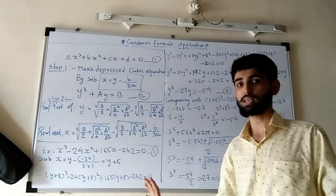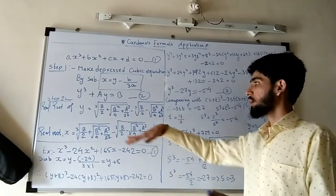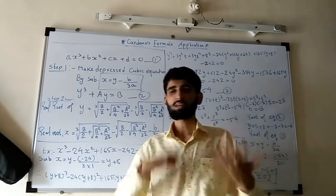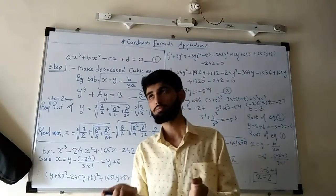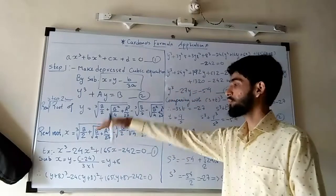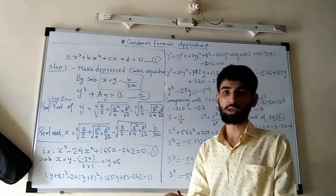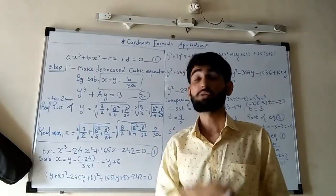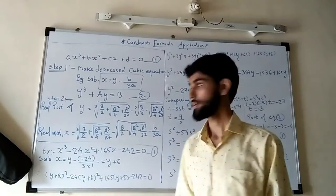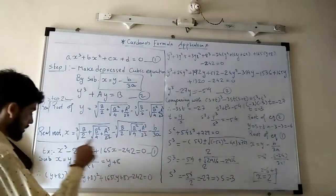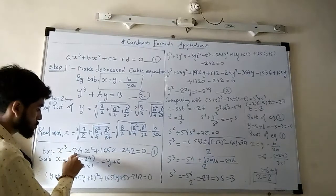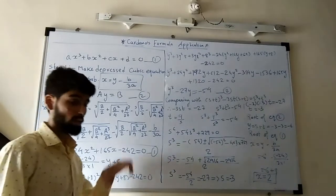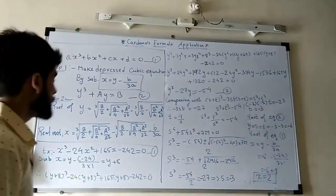We will do one simple example. I say it is simple because the cube root terms will cancel out in this one. You can try with another example, but I request all of you to use a calculator for finding cube roots, as I haven't found an easy way to find cube roots without a calculator or log table. If anyone knows, please write it in the comments. The example I have taken is: x³ minus 24x² plus 165x minus 242 equals 0.